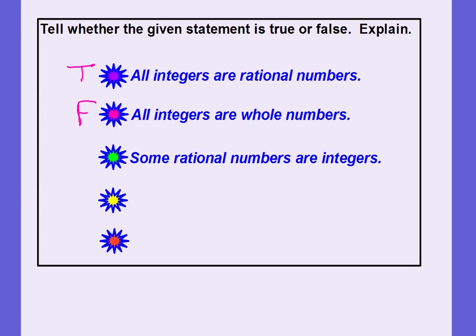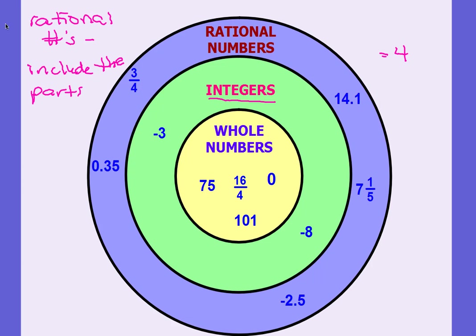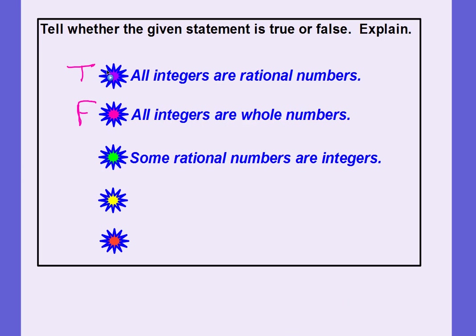'Some rational numbers are integers.' Here are the rational numbers — does it also include integers? It does. It's not saying all rational numbers are integers; it's saying some of them are. So that one is a true statement.